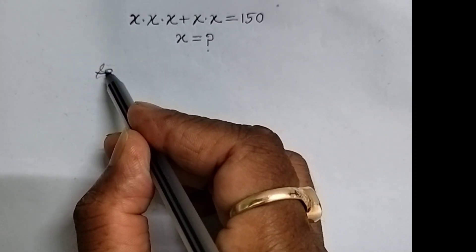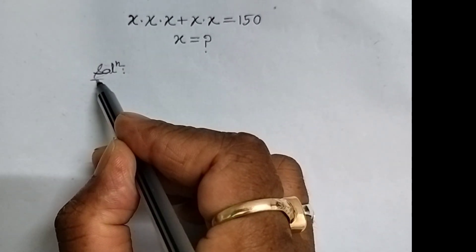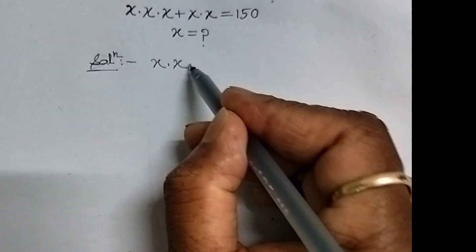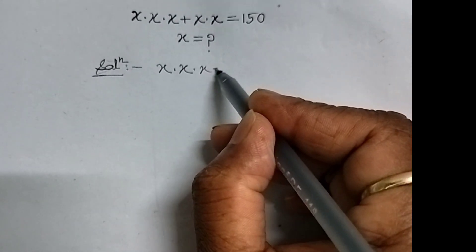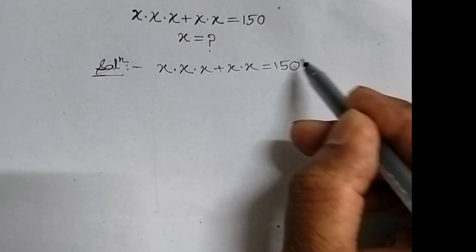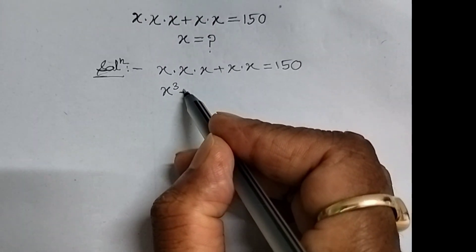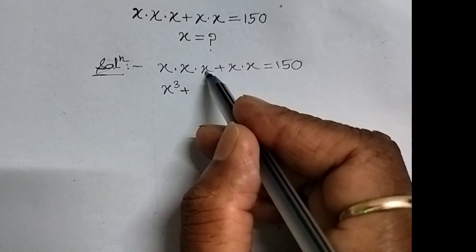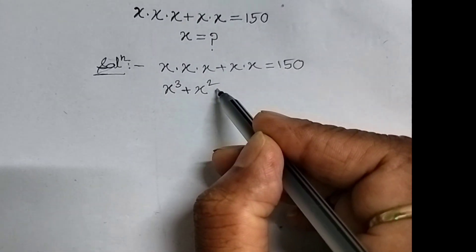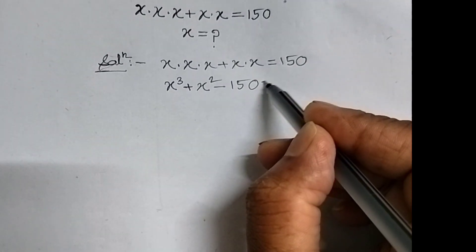Let's see the solution. We will have to write it first. We write x times x times x plus x times x equal to 150. Therefore, x cube, since we can say x times x times x is x cube, plus x times x is x square, minus 150 equal to 0.